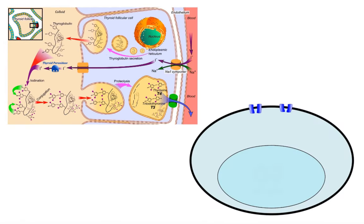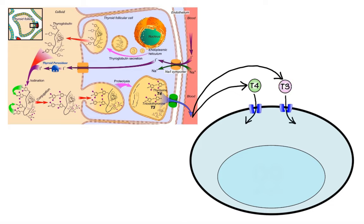Free extracellular T4 and T3 enter the target cell through transporter proteins. Once inside the cell, the amount of T3, which has greater biological activity than T4, is regulated by deiodinase enzymes 1 and 2, abbreviated D1 and D2, that catalyze the conversion of T4 to T3, thereby increasing intracellular levels of the active hormone.